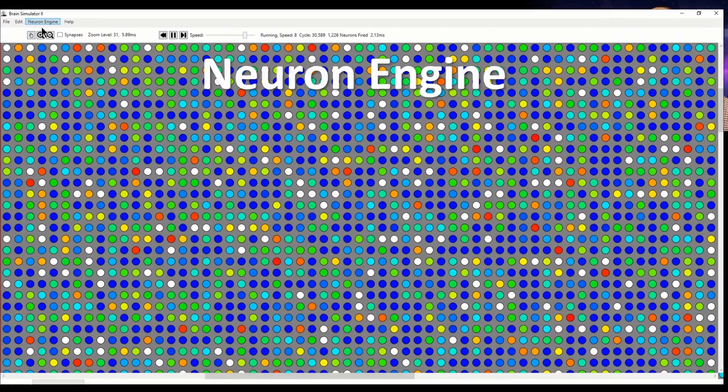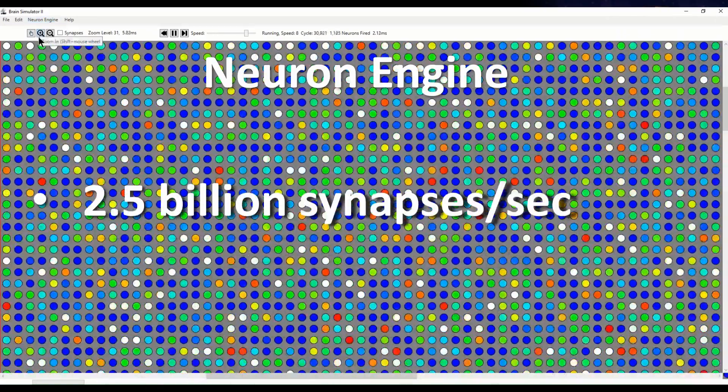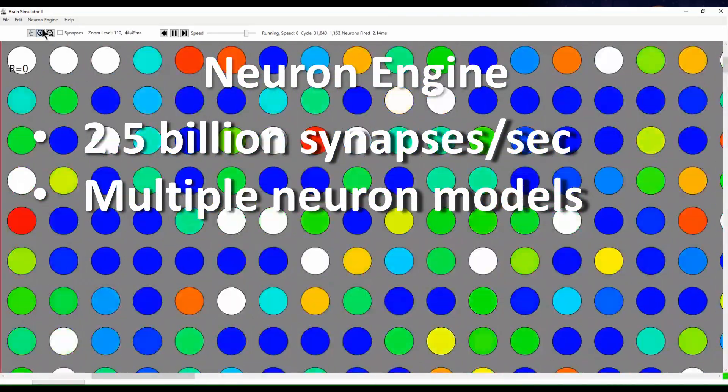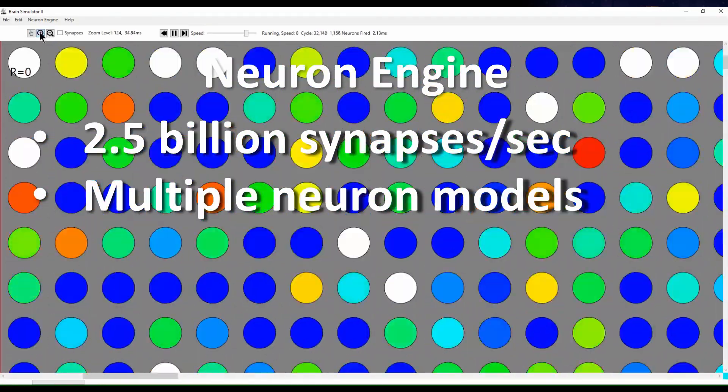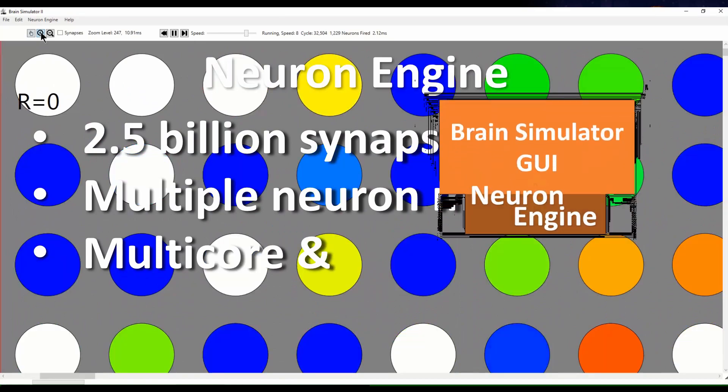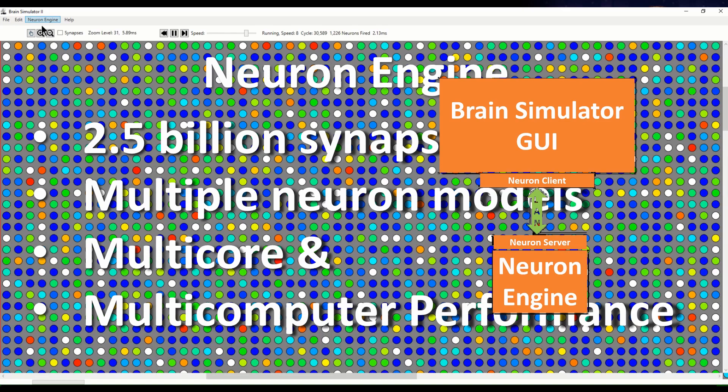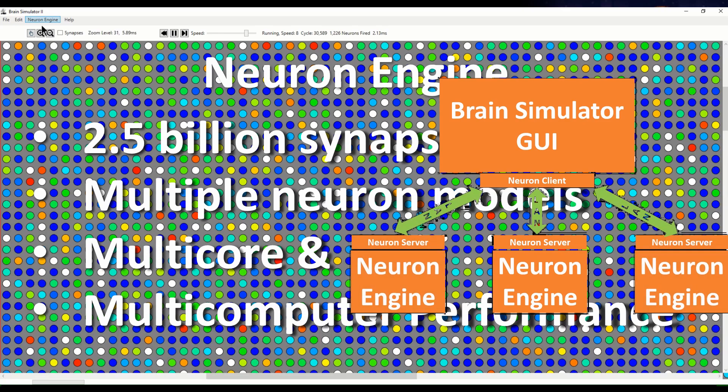The powerful Neuron Engine is fast, clocked at 2.5 billion synapses per second on a powerful desktop CPU. The Neuron Engine supports multiple spiking neuron models, and it operates in parallel on multi-core computers and is extensible across machine clusters.